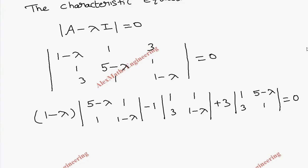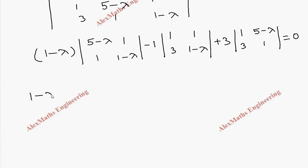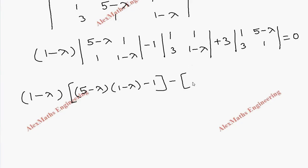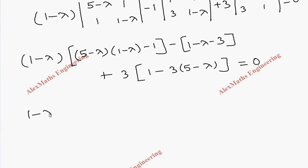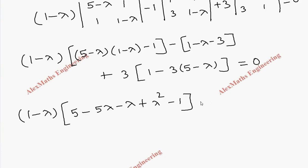Setting the expansion equal to zero: (1 minus lambda) times [(5 minus lambda)(1 minus lambda) minus 1], minus 1 times [(1 minus lambda) minus 3], plus 3 times [1 minus 3(5 minus lambda)] equals 0. Expanding the first bracket gives 5 minus 5 lambda minus lambda plus lambda squared minus 1.